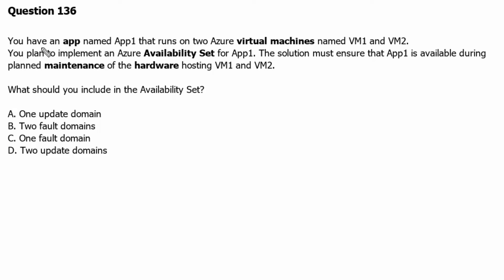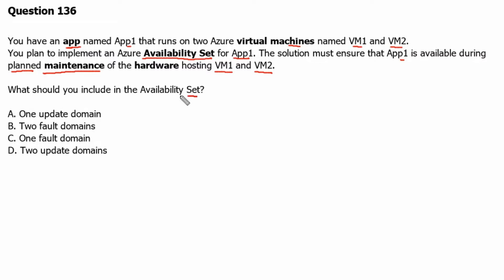Question 136. You have an app named App1 that runs on two Azure virtual machines named VM1 and VM2. You plan to implement an Azure availability set for App1. The solution must ensure that App1 is available during planned maintenance of the hardware hosting VM1 and VM2. What should you include in the availability set?